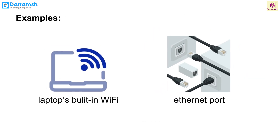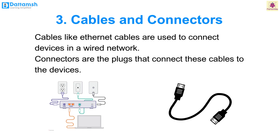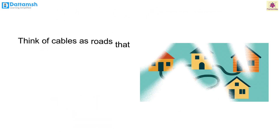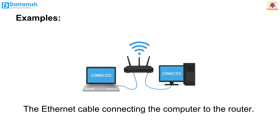Cables and connectors. Cables, like Ethernet cables, are used to connect devices in a wired network. Connectors are the plugs that connect these cables to the devices. Think of cables as roads that connect different houses in a neighborhood — just like cars travel on roads, data travels through cables to move from one device to another. Example: the Ethernet cable connecting a computer to the router.